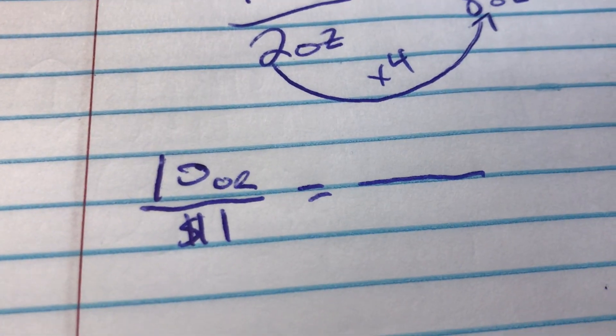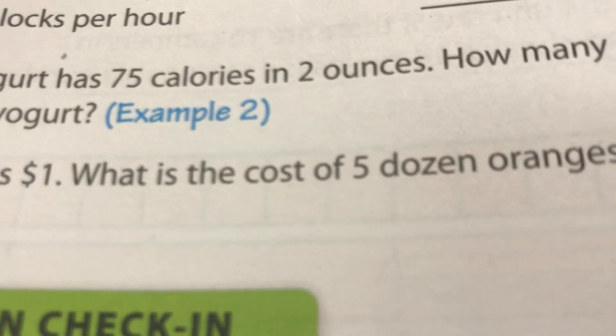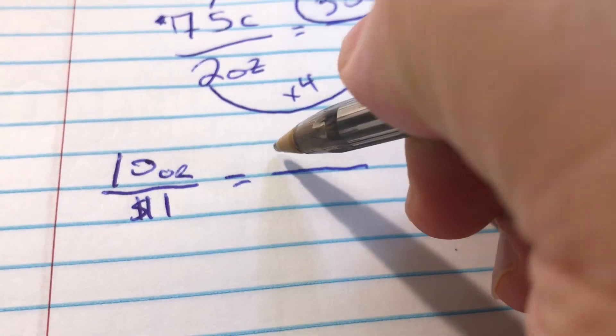It says 5 dozen, so 5 dozen is not 5. We're not going to pay 50 cents for 5 dozen. 5 dozen is 5 sets of 12. Well, 5 sets of 12 means 60. So we're going to put 60 oranges right up here.